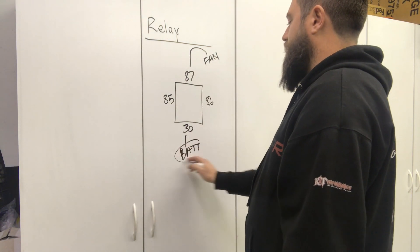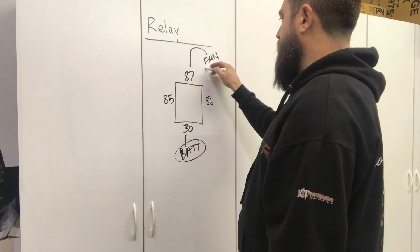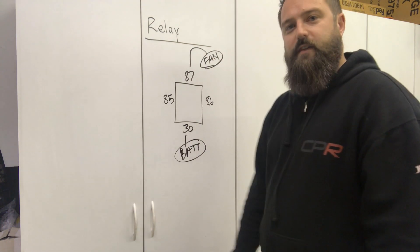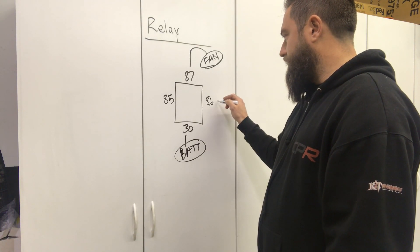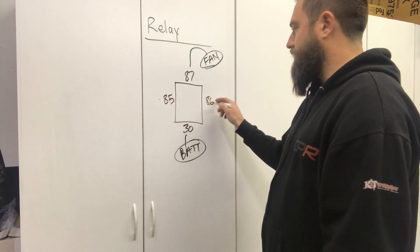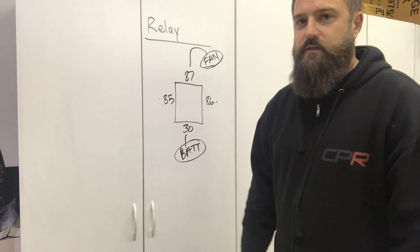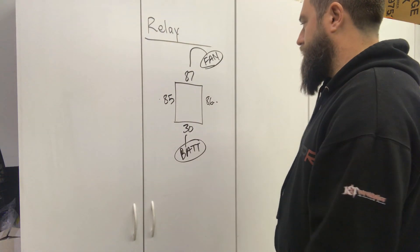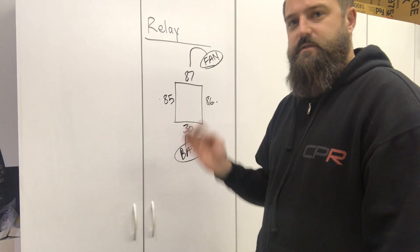We can take the current of the battery, which has a lot available, and transfer that to our fan through a relay. We can use our ECU to trigger this. If we use a relay, the current across the coil to energize this is very low. We have posts or terminals or positions, whatever you want to call them.